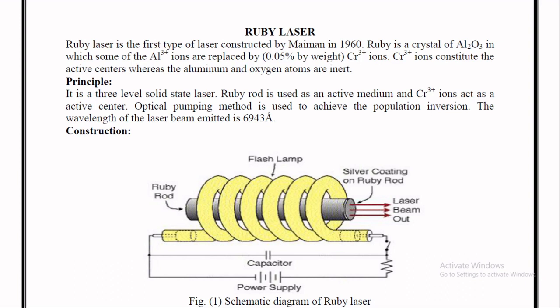Principle of ruby laser: It is a three level solid state laser. Ruby rod is used as an active medium and chromium ions act as active centers. The pumping method used is optical pumping to achieve population inversion, which I have explained in my previous lecture.